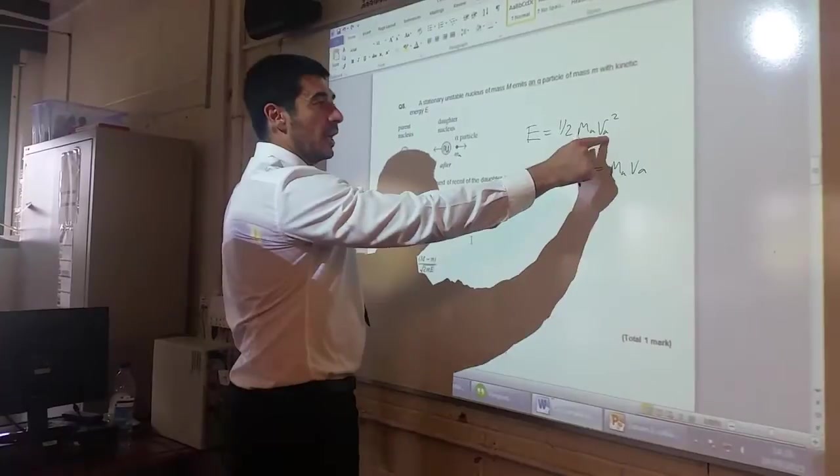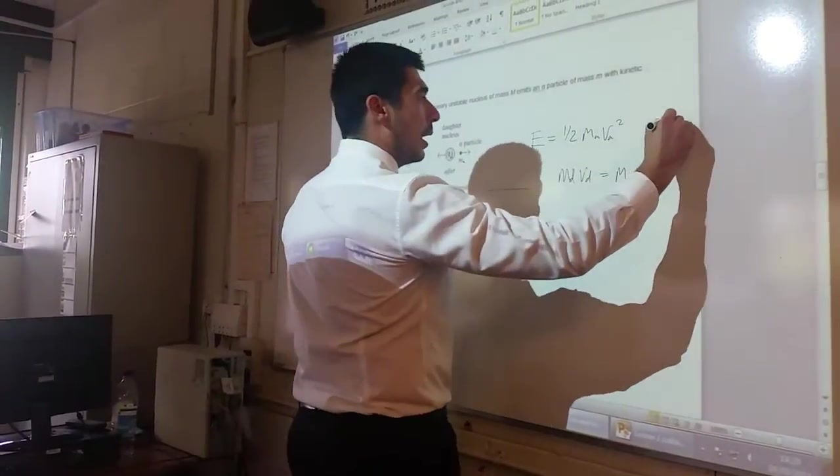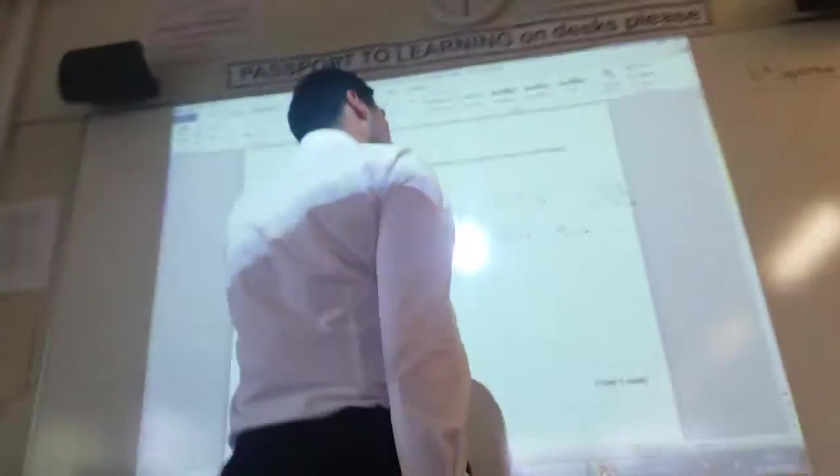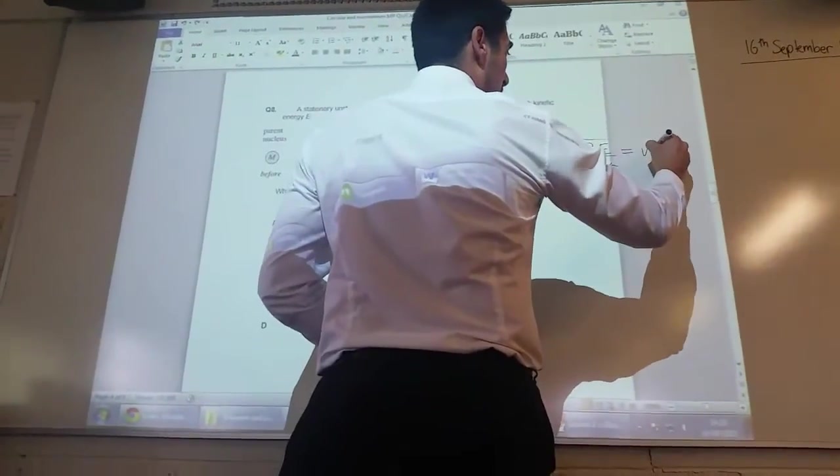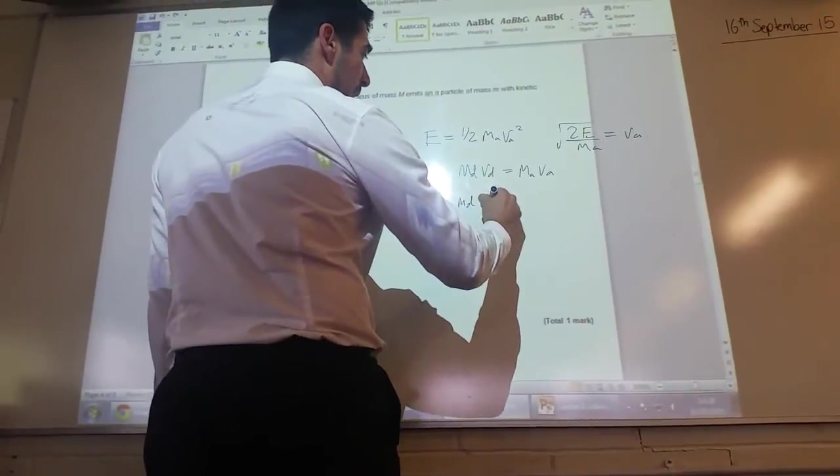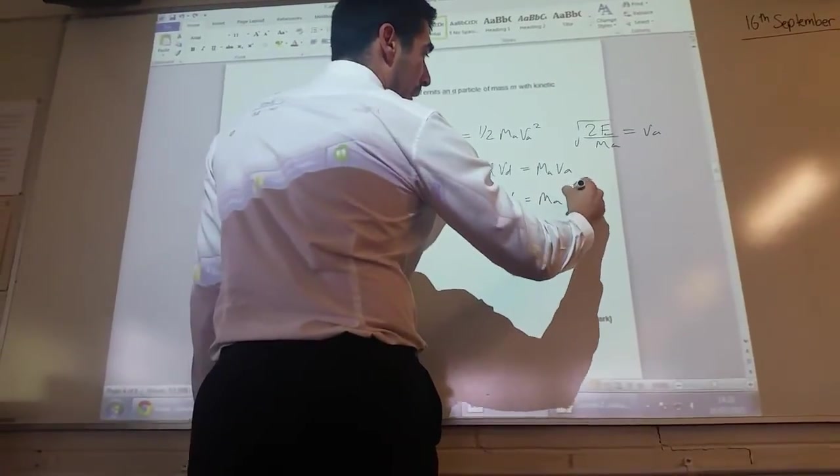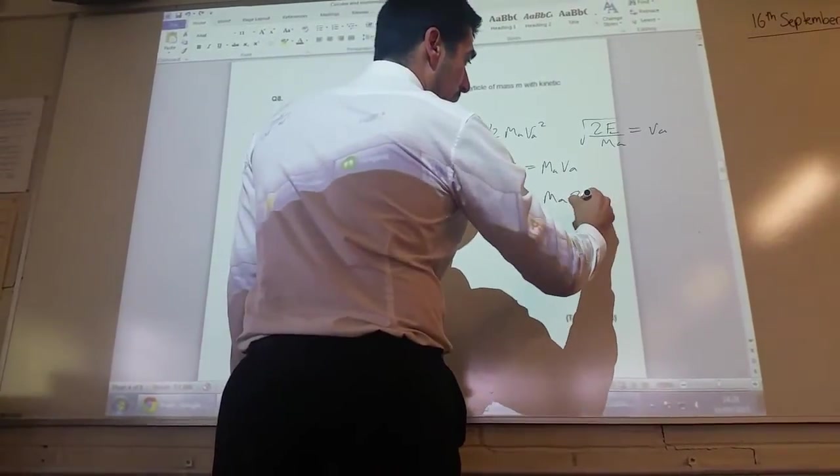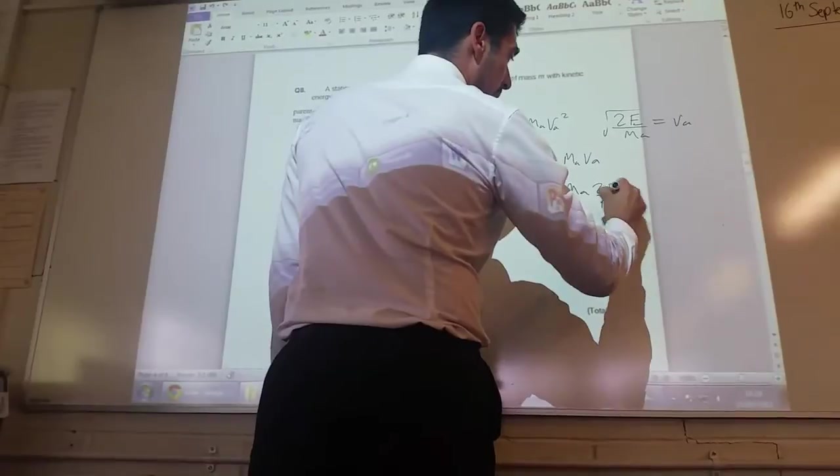Rearrange that for VA, gets me the root of 2E over MA will be equal to VA. So MD times VD equals MA times the root of 2E over MA.